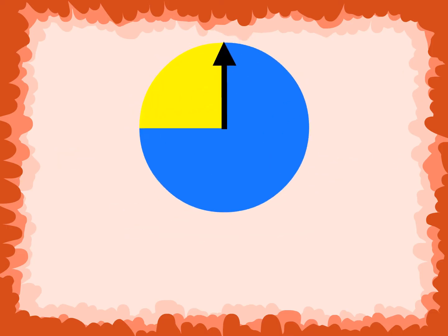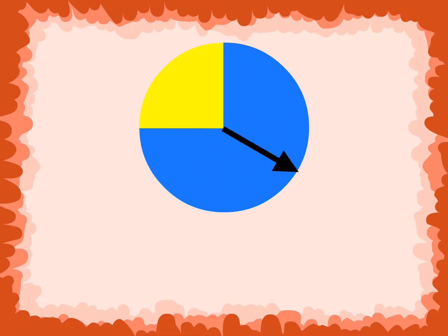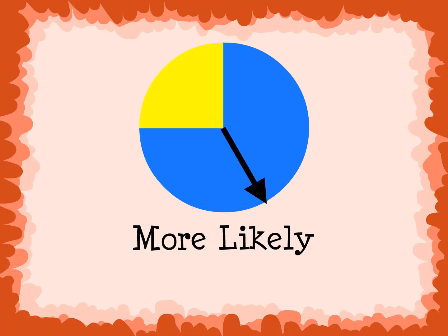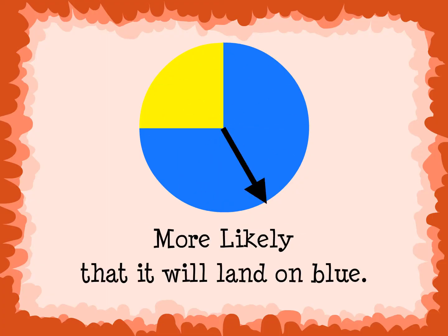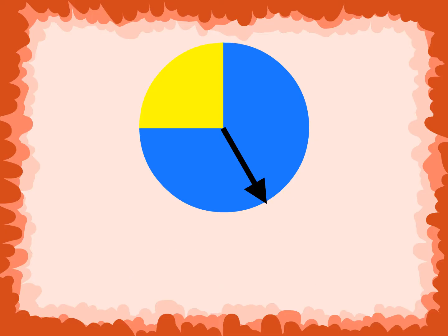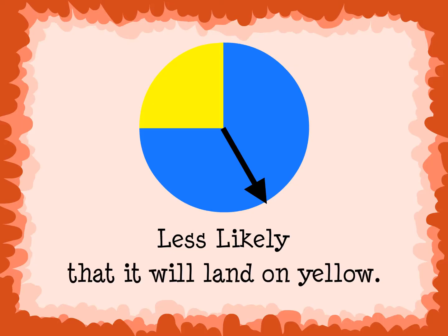If we were to predict the outcome of spinning this spinner, we would say that it is more likely that it would land on blue. We could also say that it is less likely that it will land on yellow.